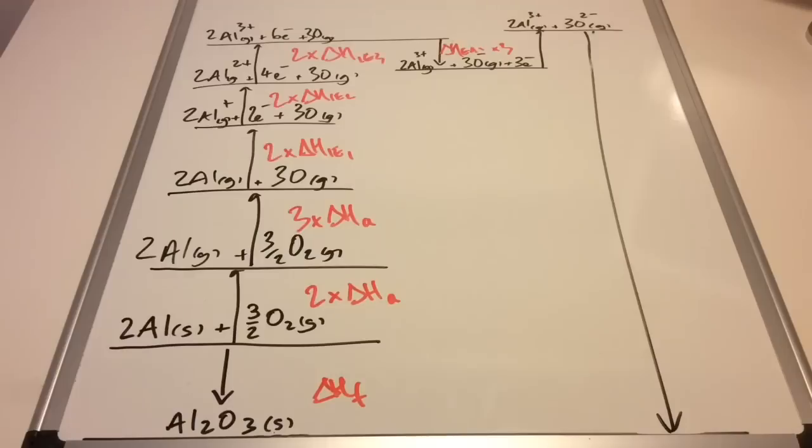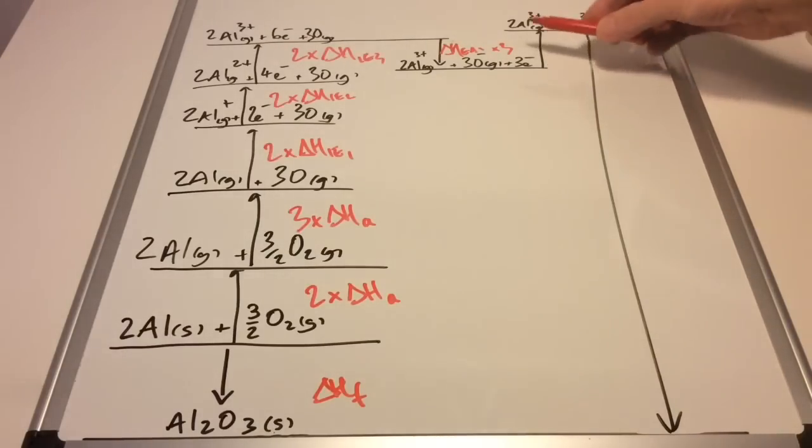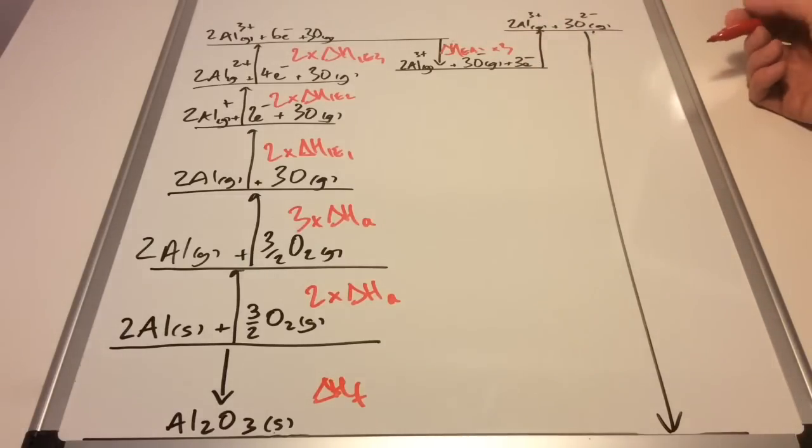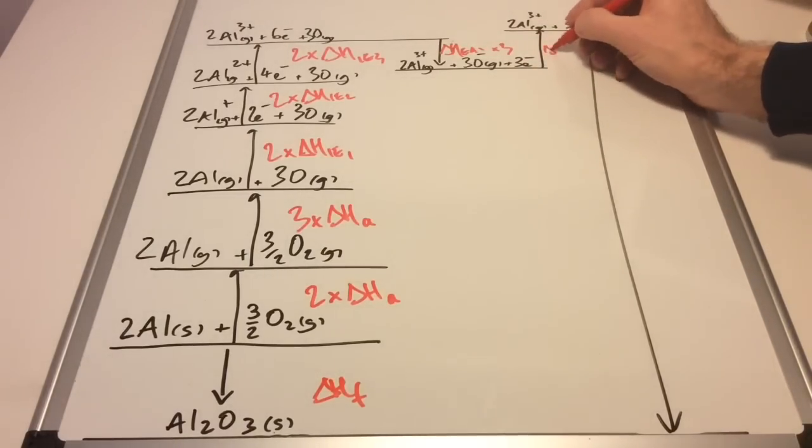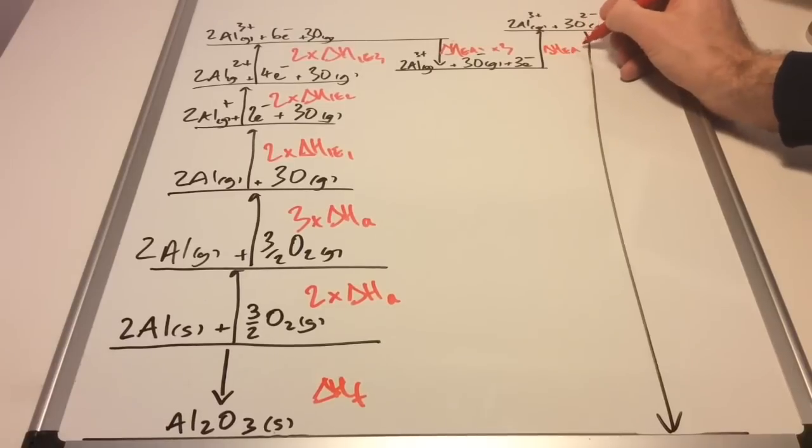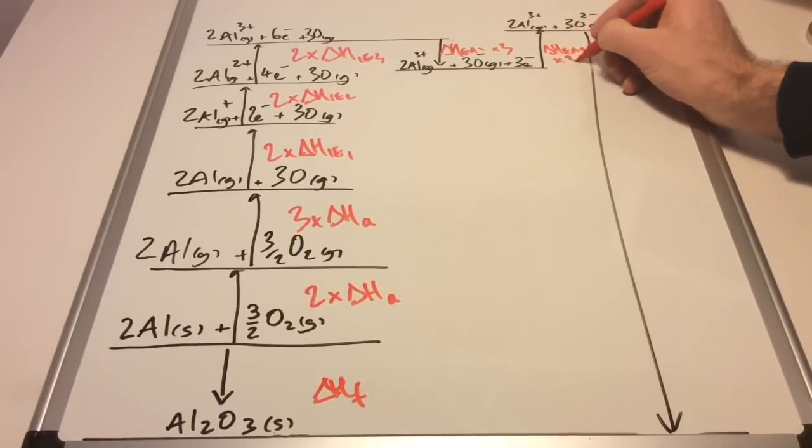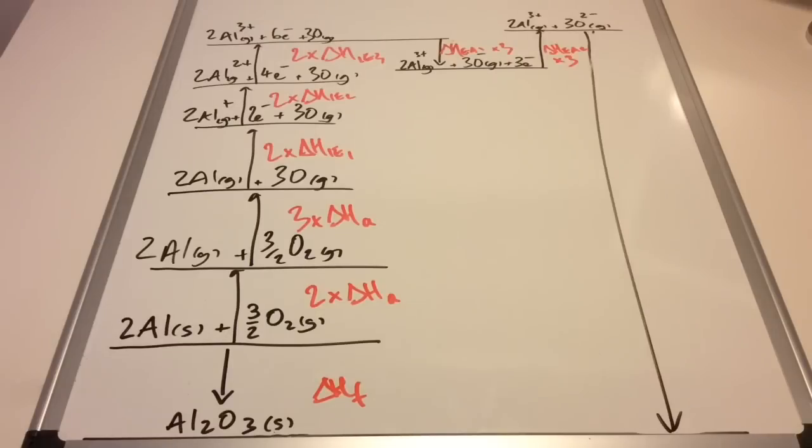Then this one goes up again. Remember we're adding negative electrons to negative ions, so there'll be a repulsion, so that needs to go up. It will be endothermic. This is ΔH EA2 and that will be multiplied by three as well.